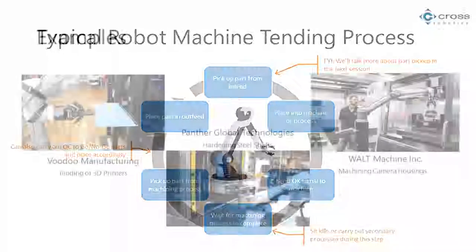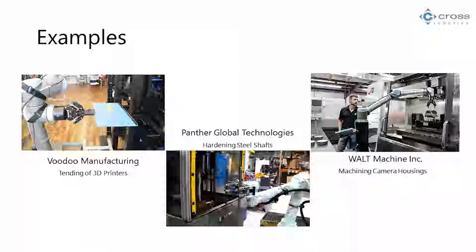Some examples of cobots being used for machine tending: Voodoo Manufacturing, a large-scale 3D printing lab with dozens of printing bays. A 3D printer needs a fresh platter inserted for each print job, then that platter needs to be removed. They were doing that manually for a long time, but adding a cobot allowed them to run all night and they basically tripled their production by automating it.